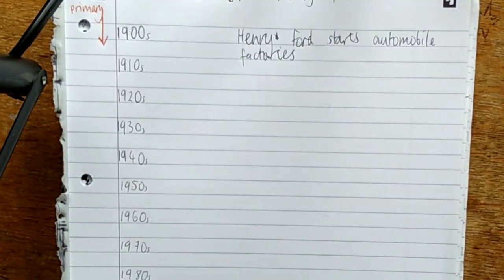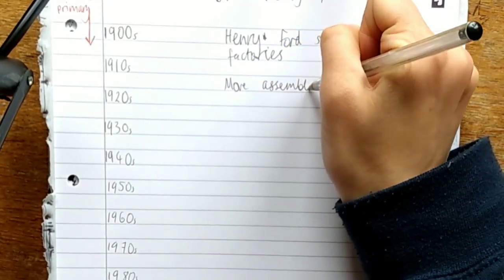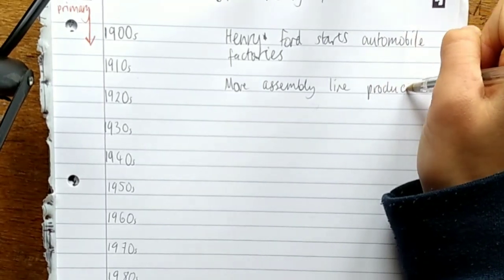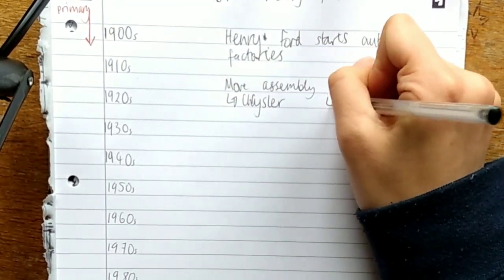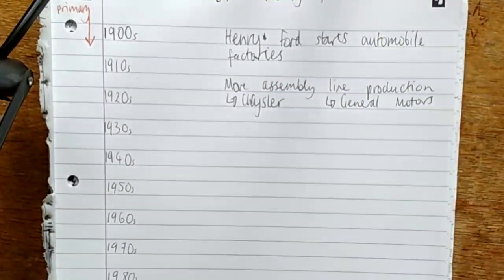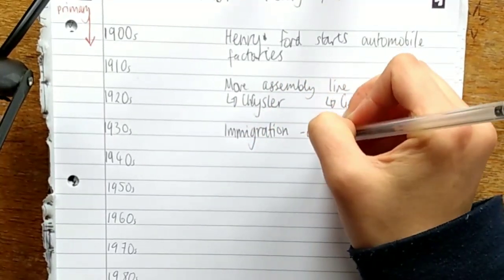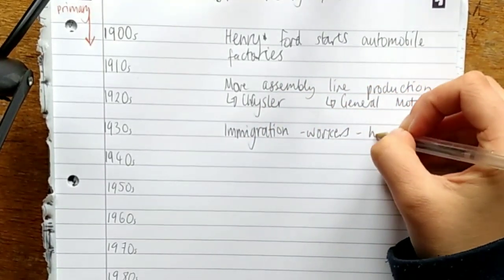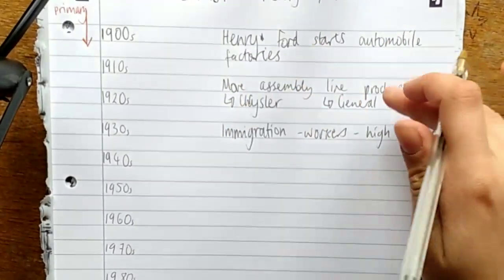Throughout the 1910s, 1920s and 1930s, more assembly line car factories set up. Chrysler and General Motors set up factories in Detroit, in the inner city area. From the 1910s and 1920s, there was a lot of immigration. The population of Detroit increased a lot. Working class people moved into the area because of the relatively high wages provided at the car factories.